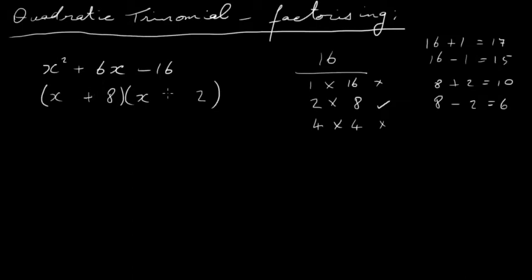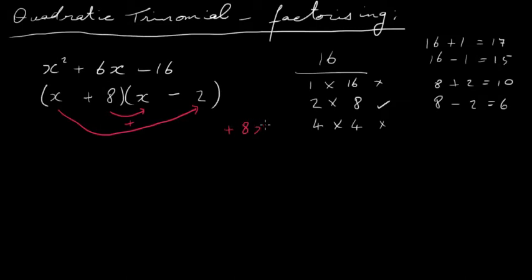I'll put plus with 8 and minus with 2, because I want a plus 6x and the biggest number should be positive. Checking: x times x gives x squared; plus 8 times minus 2 gives minus 16. For the middle term: plus 8 times x is plus 8x, x times minus 2 is minus 2x — adding gives plus 6x. So (x + 8)(x − 2) = x² + 6x − 16.